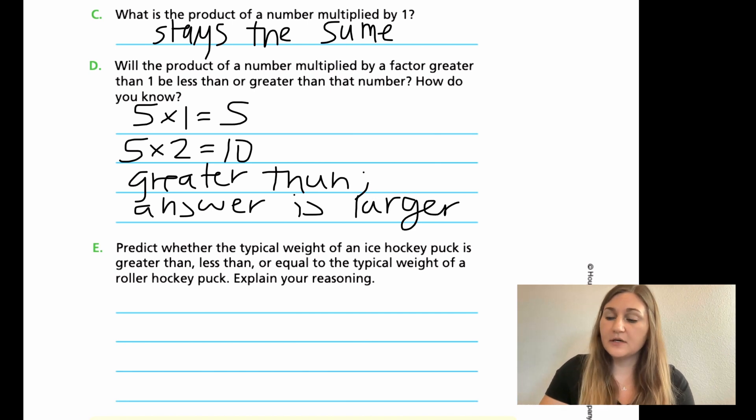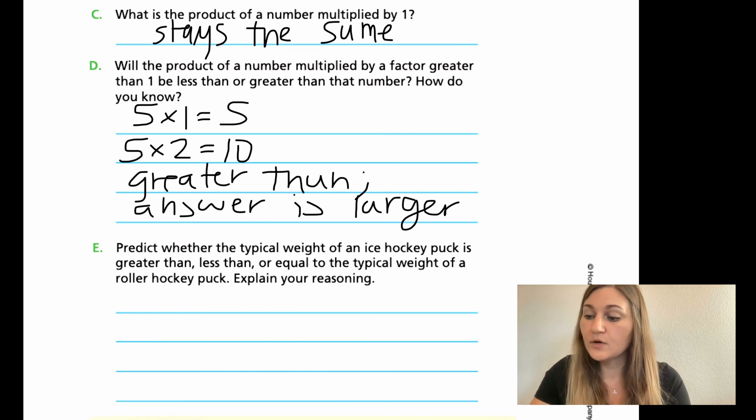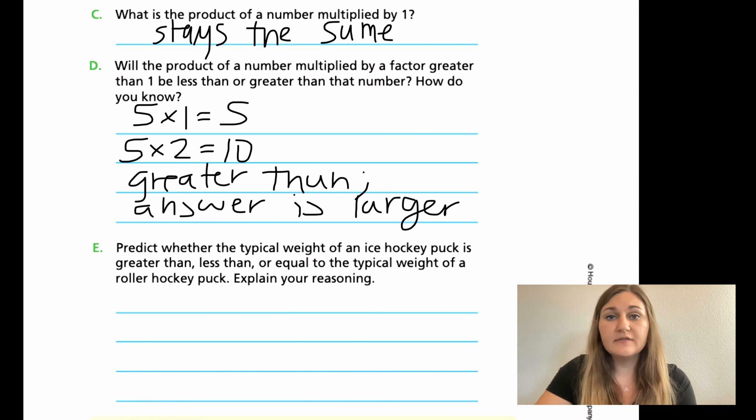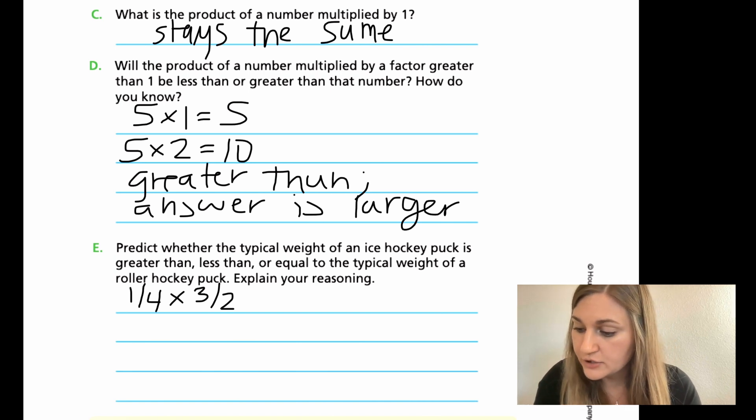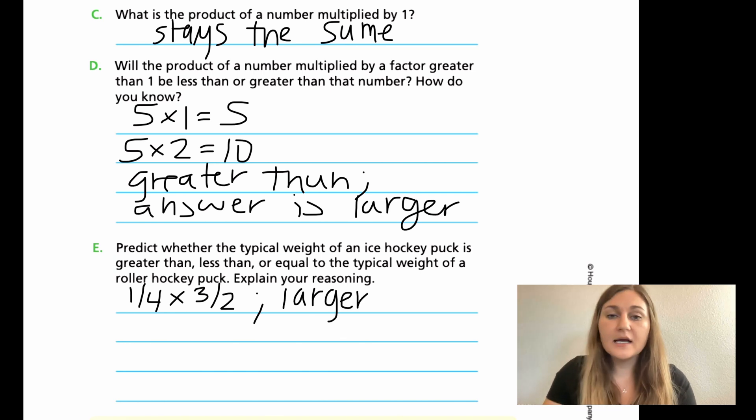So now for E, the point that is really coming across is predict whether the typical weight of an ice hockey puck is greater than, less than, or equal to the typical weight of a roller hockey puck. Explain your reasoning. So we actually aren't even solving this problem right now. All we're doing is we're predicting. We have the original weight as one fourth. I'm multiplying it by something bigger than one. And that's my three over two, even though it's a fraction, it's still larger than one. So my answer is going to be bigger than one fourth. That ice hockey puck is going to be larger because I'm multiplying it by something that's bigger than one.